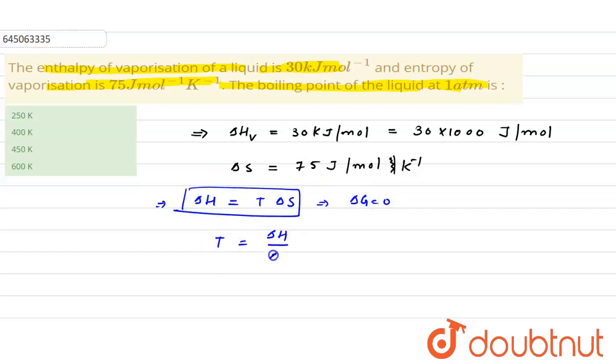ΔH divided by ΔS. So it will be 30,000 divided by 75. When we calculate, we get 400. So the temperature at the boiling point is 400 kelvin. Our answer is the second option. Thank you.